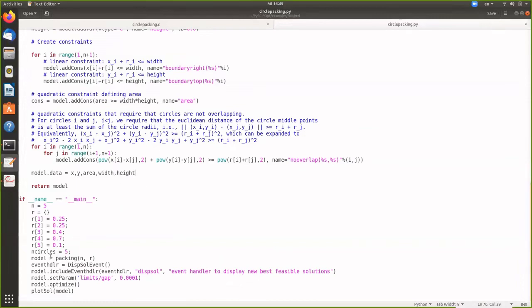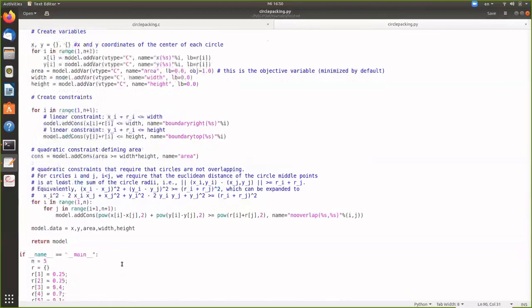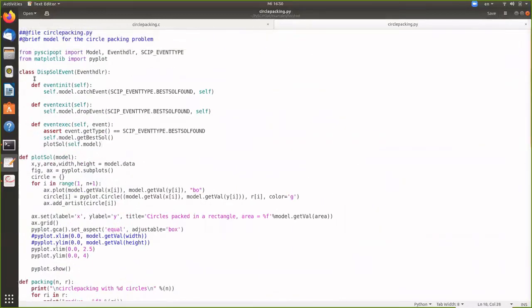And then another element that we have here is an event handler. So event handlers allow you to stop SCIP at some interesting points of the solution process. Like for example, and what we do in this case is that we stop where we find a new best feasible solution and do something which you can define. And this is defined here. So here we create this class of an event handler for displaying solutions.